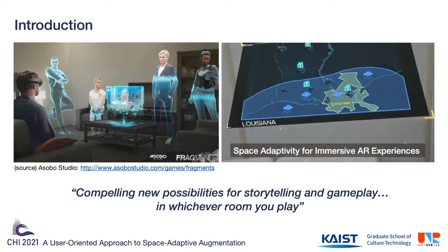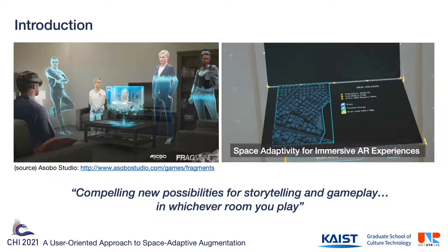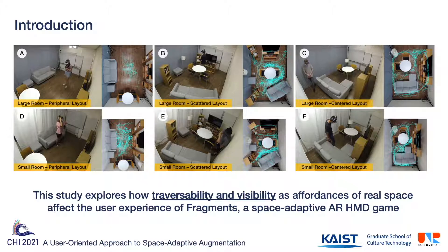With these space-adaptive features, the game's mission is to provide compelling new possibilities for storytelling and gameplay in whichever room you play. This got us thinking: would whichever room really provide the level of immersive narrative experience the game aspires to? That is why we decided to explore how affordance is configured by real spatial features of various types of rooms — namely traversability and visibility — and how they affect narrative experience in this game.